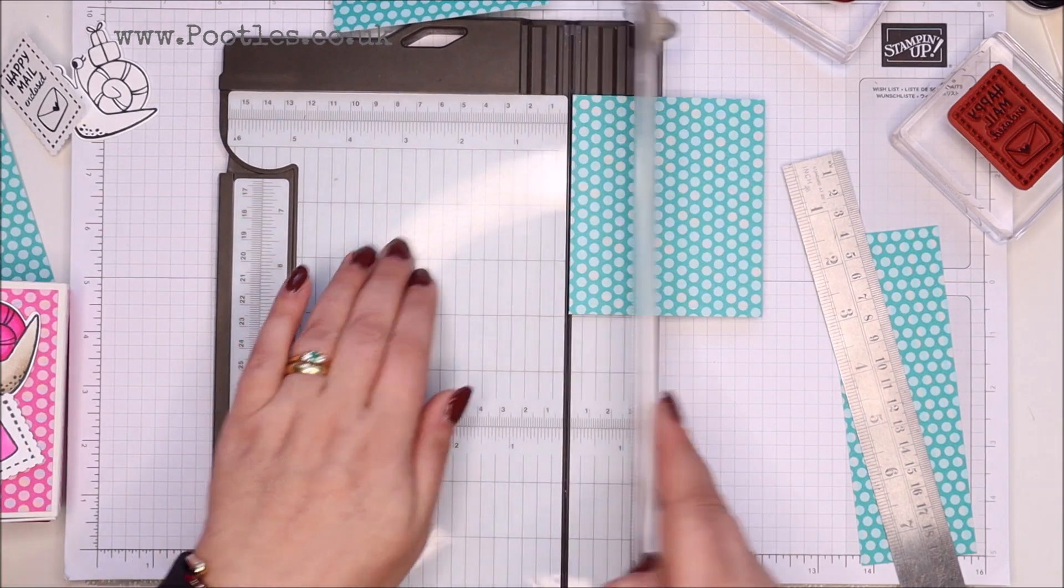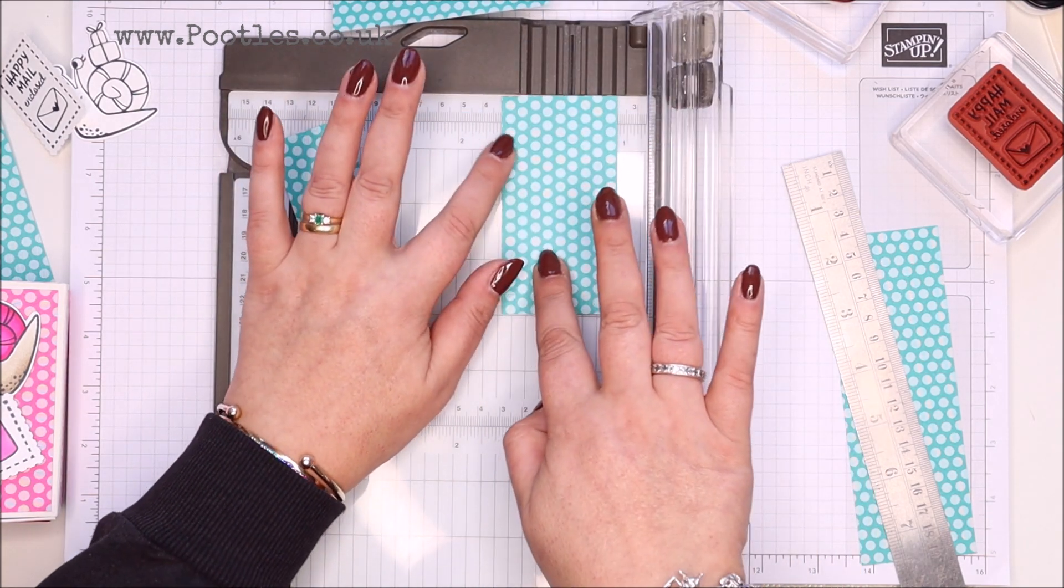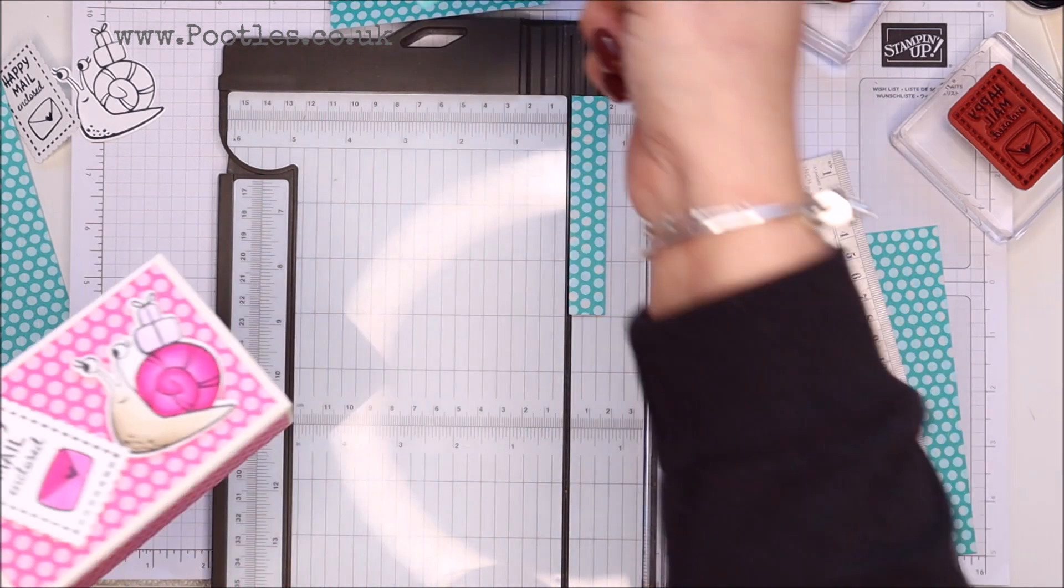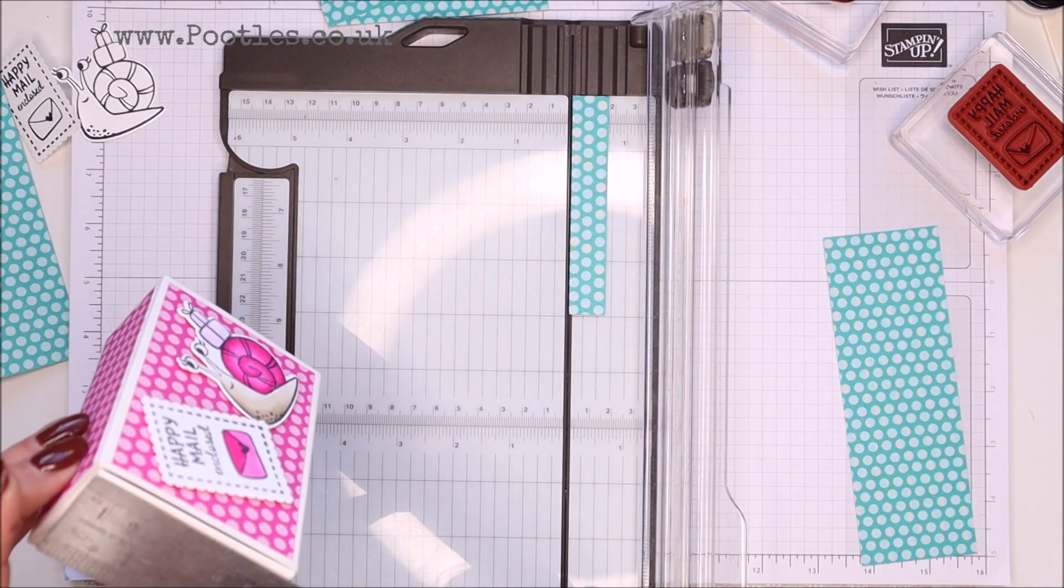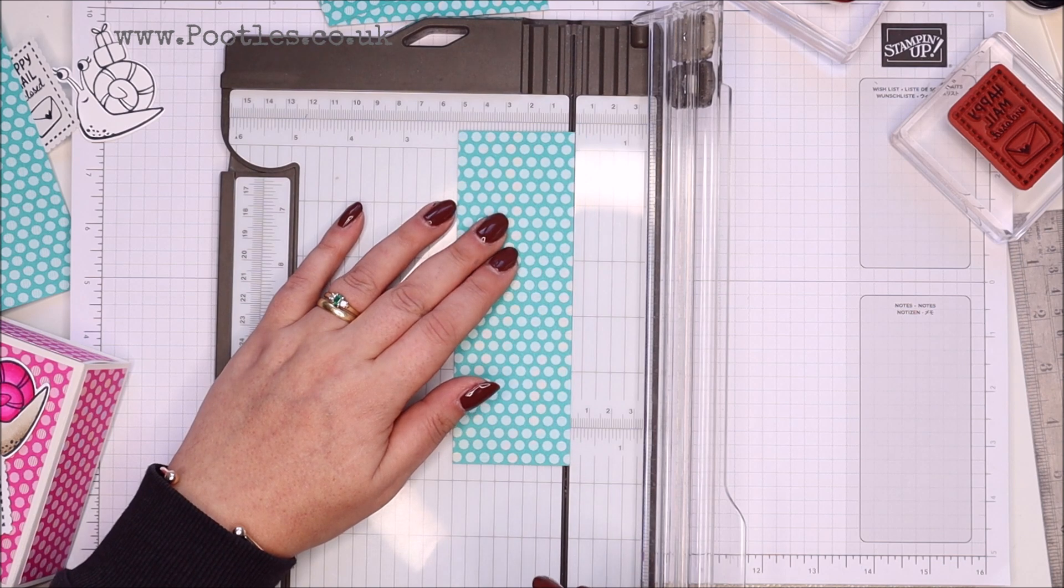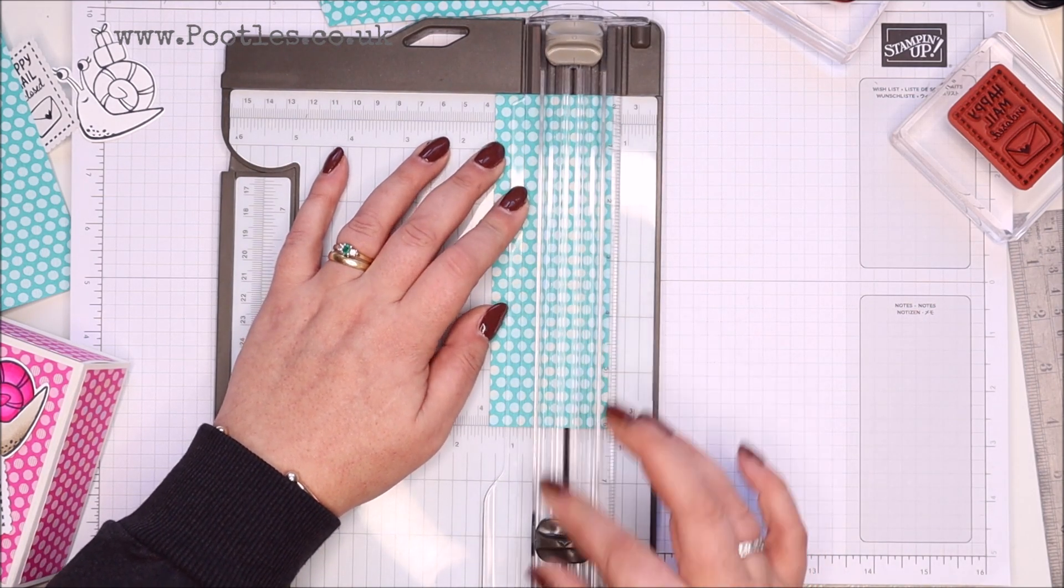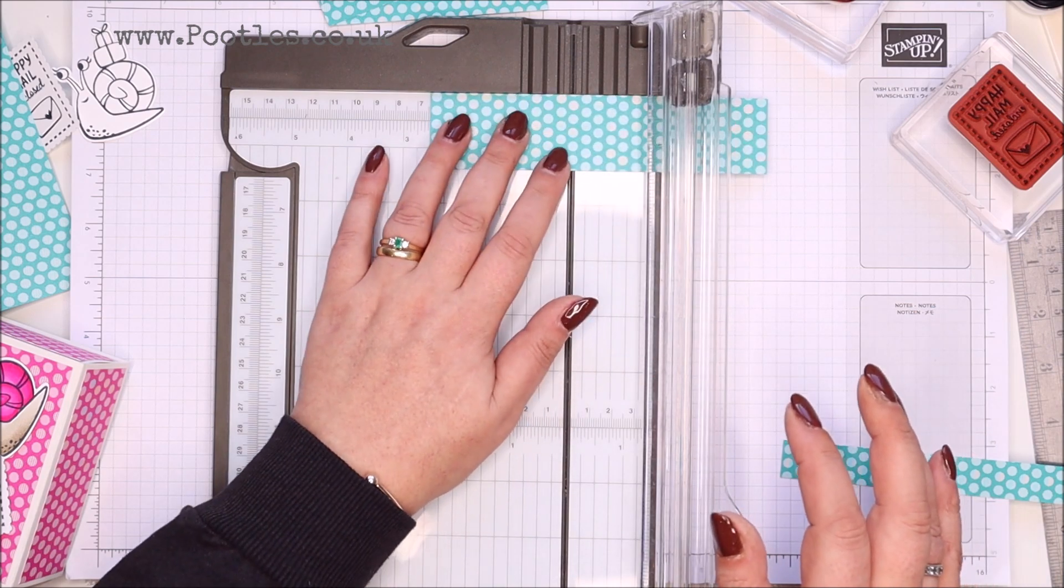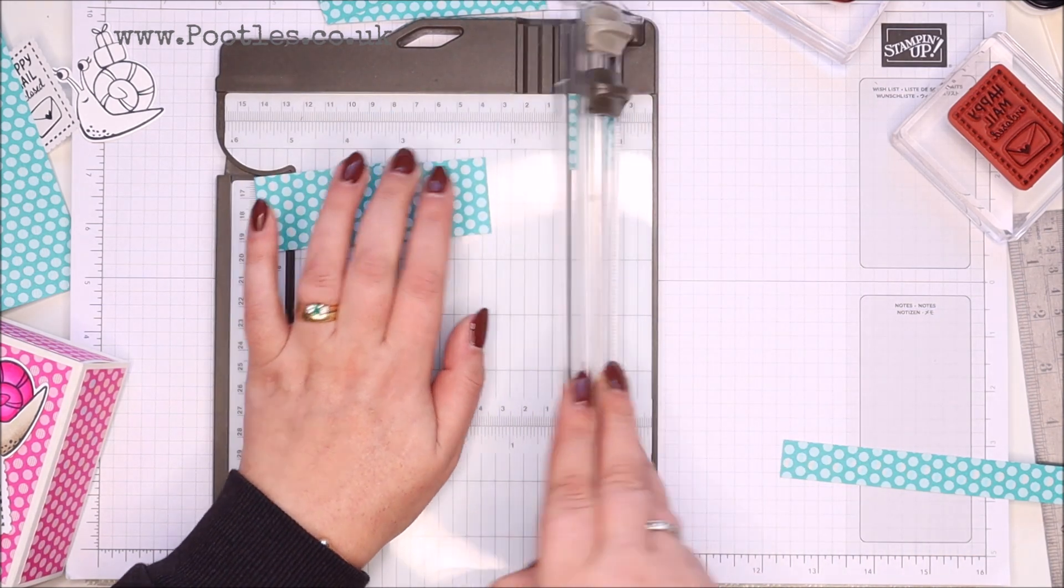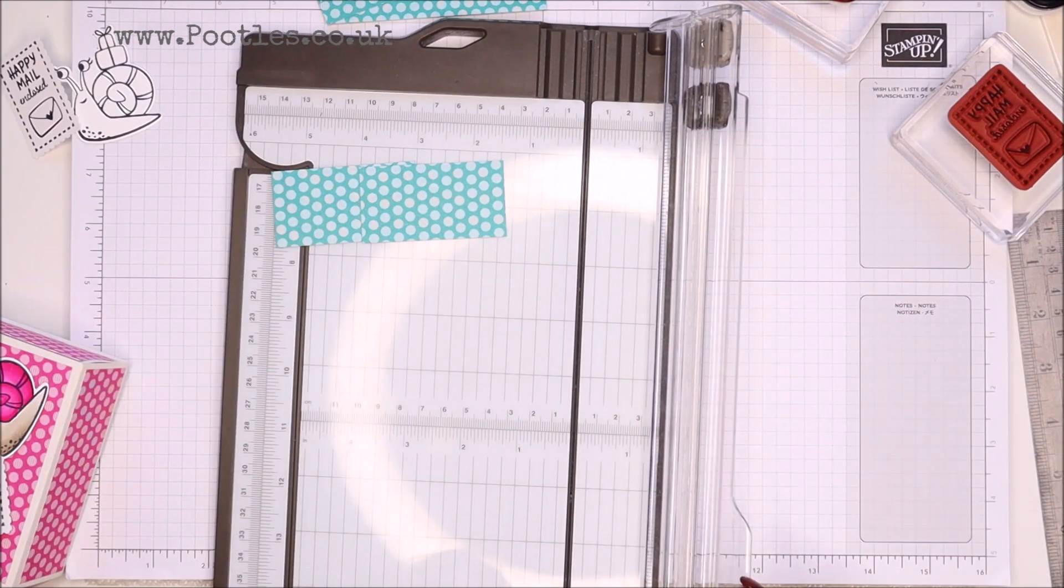So that is four centimeters, which means I need to cut two of these at three and a half. So that's for my two sides. And then the ends are going to be six and a half by three and a half. Here's my other piece. So I want, I'm going to trim that down to three and a half. Six and a half and six and a half. And that's from one sheet of designer series paper, because those are my three pieces left. Fabulous.